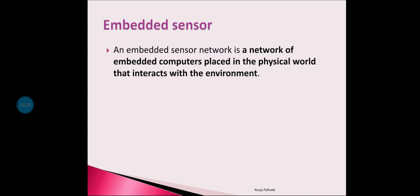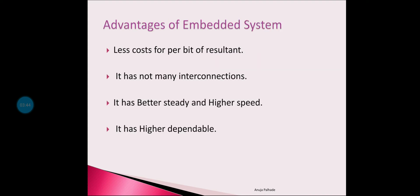An embedded sensor network is a network of embedded computers. If we use sensors within an embedded system and use many such systems to perform a single task, it becomes an embedded sensor network. An embedded sensor network is a network of embedded computers placed in the physical world that interact with an environment.